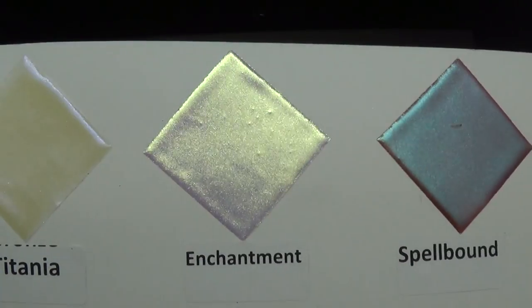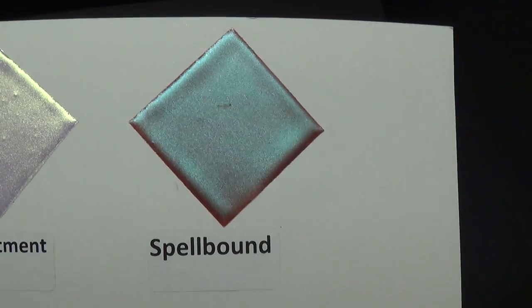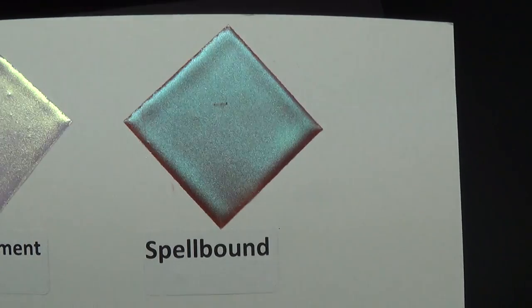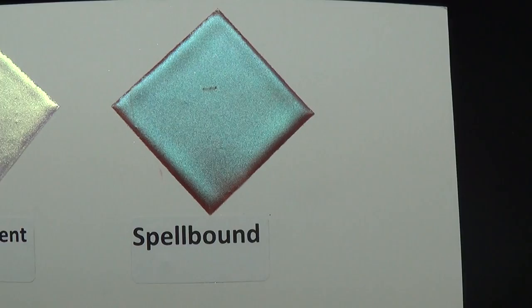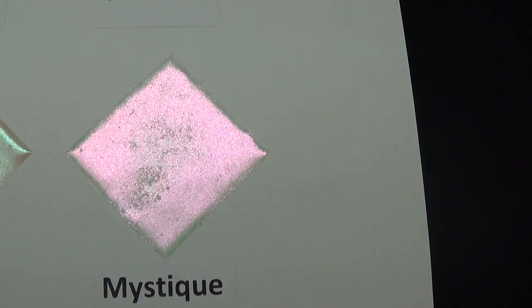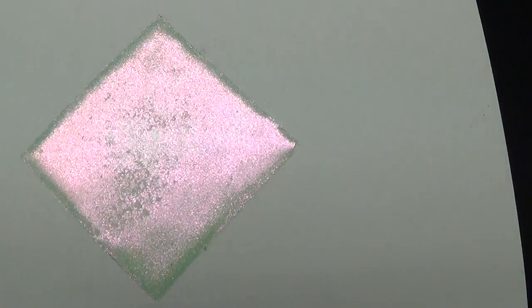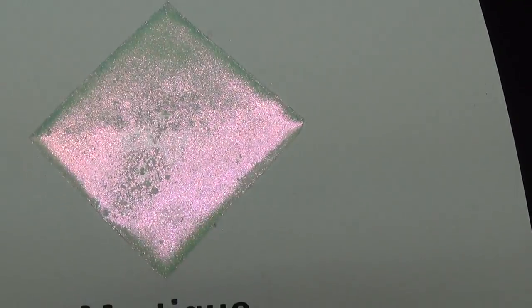Then we have Spellbound, which is more of a violet-bluish tone with burgundy or violet in the background. And Mystique, which you can see has pink and reddish tones when reflected in the light.